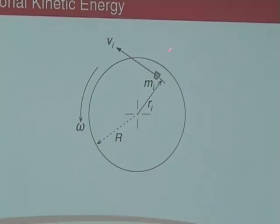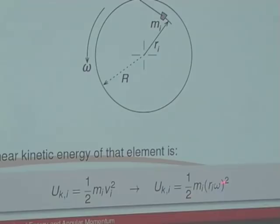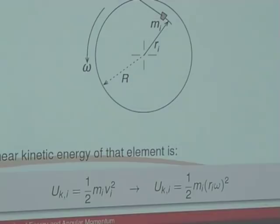We know the kinetic energy of that element is ½mᵢvᵢ². I've replaced vᵢ with rᵢω. Notice there's no subscript on omega — it doesn't matter where you are on this disk, the rotational velocity is always ω. The tangential velocity changes depending on radius: near the centre it's close to zero, at the edge it's maximum. But ω is the same everywhere. So the kinetic energy of that element is ½mᵢ(rᵢω)².